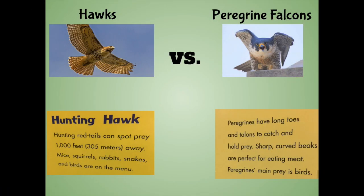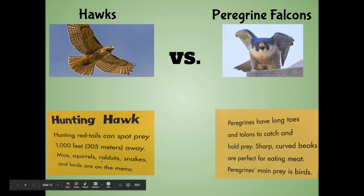For each topic, let's take a look at the subtopic of hunting and see what's the same and what's different for these two raptors. Let's first look at the hawk. Hunting red-tails can spot prey 1,000 feet or 305 meters away. Mice, squirrels, rabbits, snakes, and birds are on the menu.